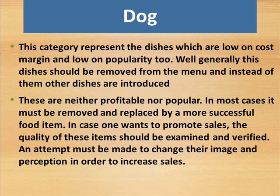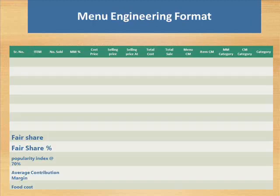Dog: This category represents the dishes which are low on contribution margin and low on popularity too. Generally these dishes should be removed from the menu and instead other dishes are introduced. These are neither profitable nor popular; in most cases they must be removed and replaced by a more successful food item. In case one wants to promote sales, the quality of these items should be examined and verified. An attempt must be made to change their image and perception in order to increase sales.